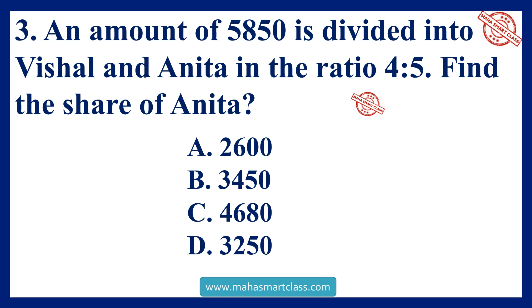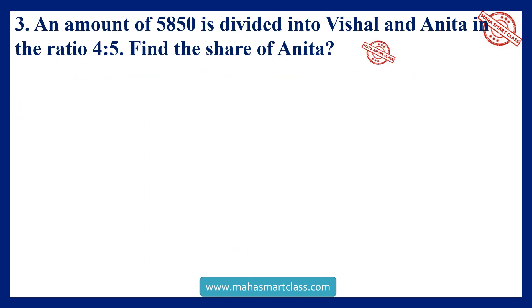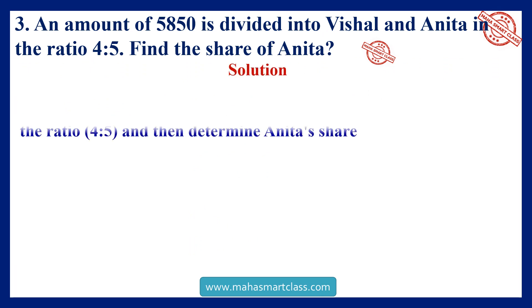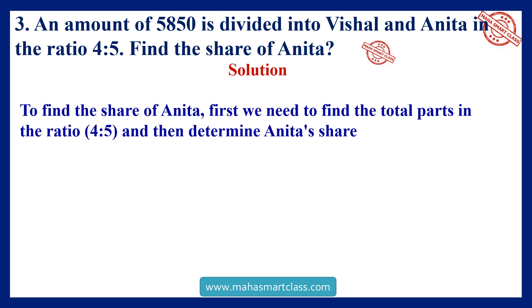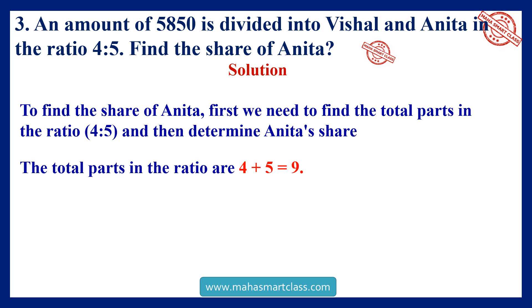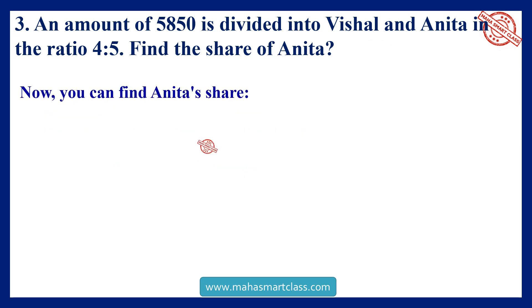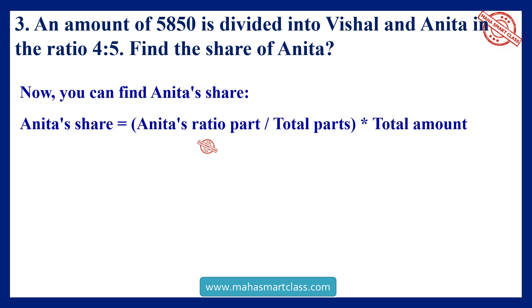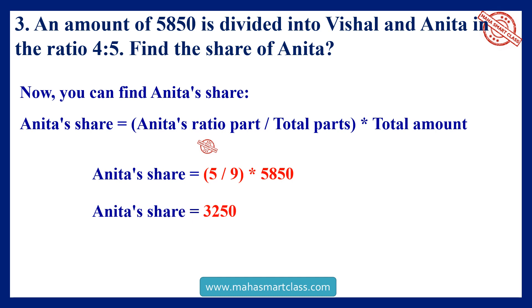An amount of 5850 is divided between Vishal and Anita in the ratio 4 to 5. Find the share of Anita. To find the share of Anita, first we need to find the total parts in the ratio 4 to 5, which equals 9. Anita's share equals Anita's ratio part divided by total parts, multiplied by the total amount: 5 divided by 9 multiplied by 5850 equals 3250.